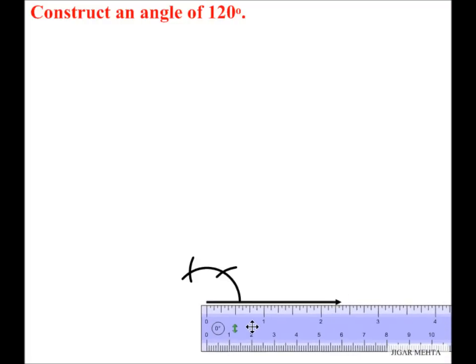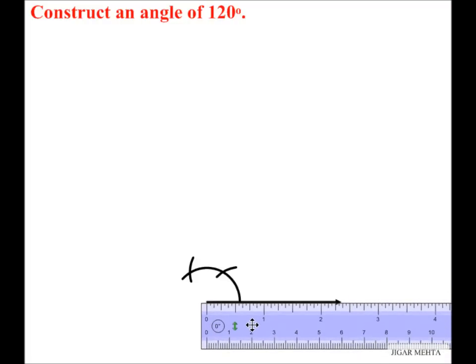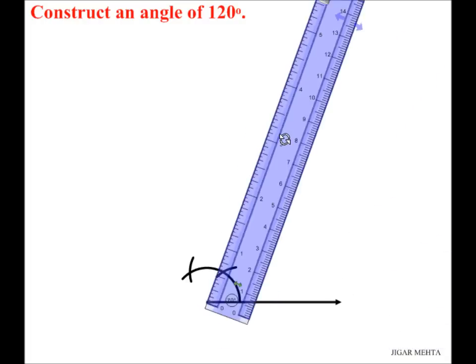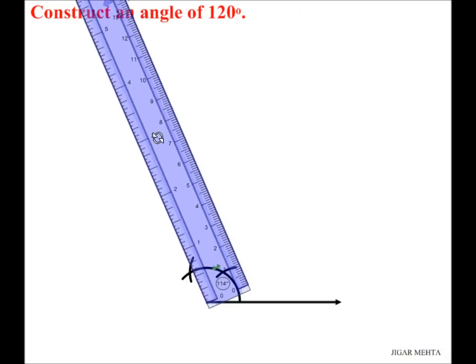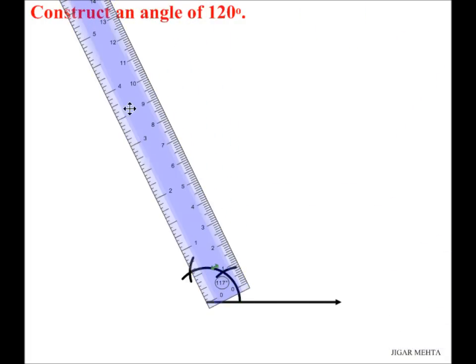I'm going to use my pointer. I'm going to move my pointer to the scale here and I'm going to make another ray which gives me an angle of 120 degrees.